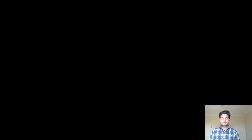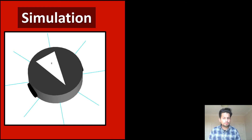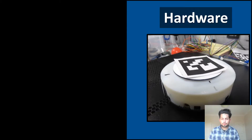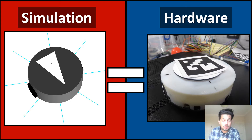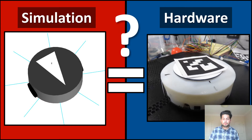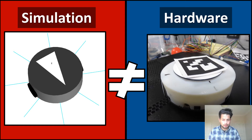Before going into detail I would like to ask you a question important for this lecture. Let's assume that we run our experiments in simulation, get the results, and we're happy with them. Now we want to run the same experiments in hardware. Are we going to get the same results? Spoilers — no. The results are going to change and be different, and that's what we refer to in research as the reality gap.